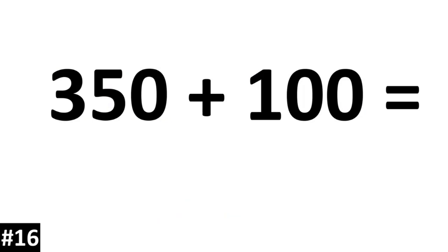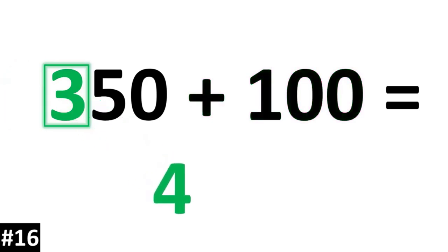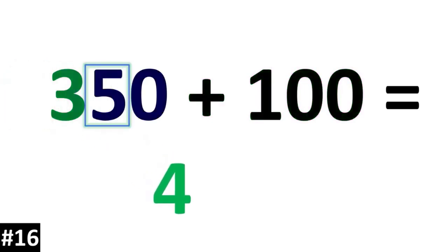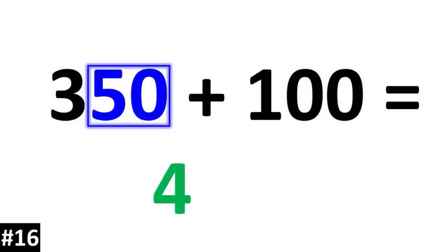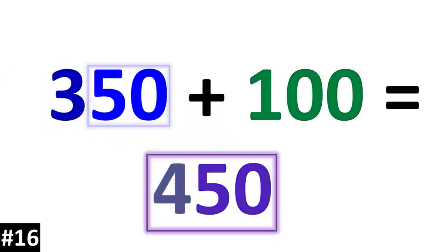350 plus 100. If we add 100, the 3 is going to go up to 4. The other numbers stay the same, so 350 plus 100 is 450.